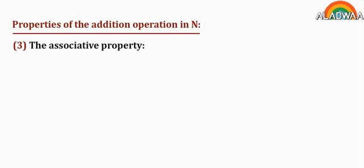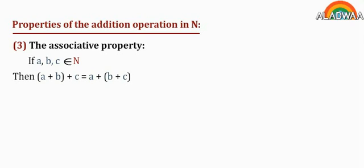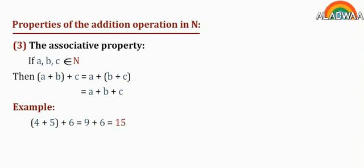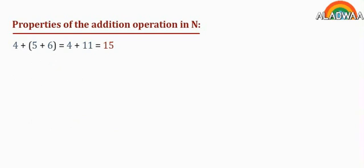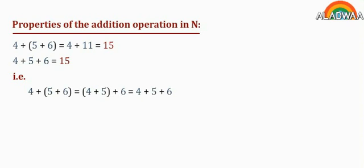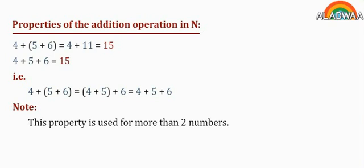Property 3: the associative property. If a, b, and c belong to the set N, then (a plus b) plus c equals a plus (b plus c), which equals a plus b plus c. For example, (4 plus 5) plus 6 equals 9 plus 6, which is 15. And 4 plus (5 plus 6) equals 4 plus 11, which equals 15. Note: this property is used for more than two numbers.